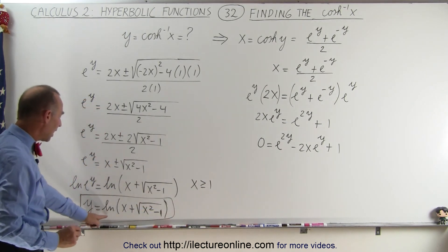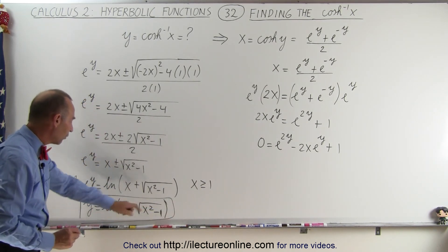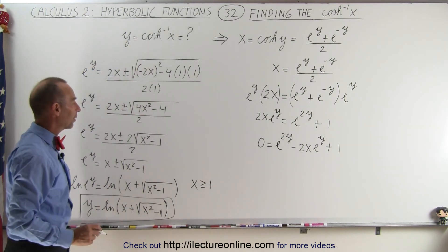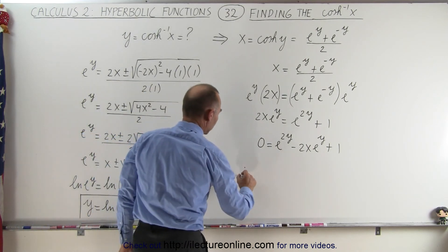Since y is equal to the natural log of x plus the square root of x squared minus 1, and y is also equal to the inverse hyperbolic cosine, we can then conclude,